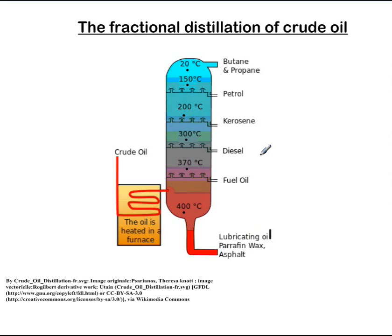At higher temperatures we get diesel oil, which forms carbon chains around 16 to 20 carbons. These carbon chains are longer than petrol. Petrol is higher up in the tower and diesel is lower down, so diesel has a higher boiling point of 300 degrees Celsius because it has longer carbon chains.